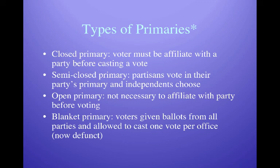There are several types of primaries. In a closed primary, a voter must affiliate with a party before casting a vote — you register ahead of time as a Democrat or Republican and can only vote in your party's primary. A semi-closed primary allows you to register as a Democrat, Republican, or Independent; if you're Independent, you can choose which primary to vote in. In an open primary, you don't have to register at all — you go to the polls on primary day, say which primary you want, and vote in it. So Democrats can vote in the Republican primary and vice versa.